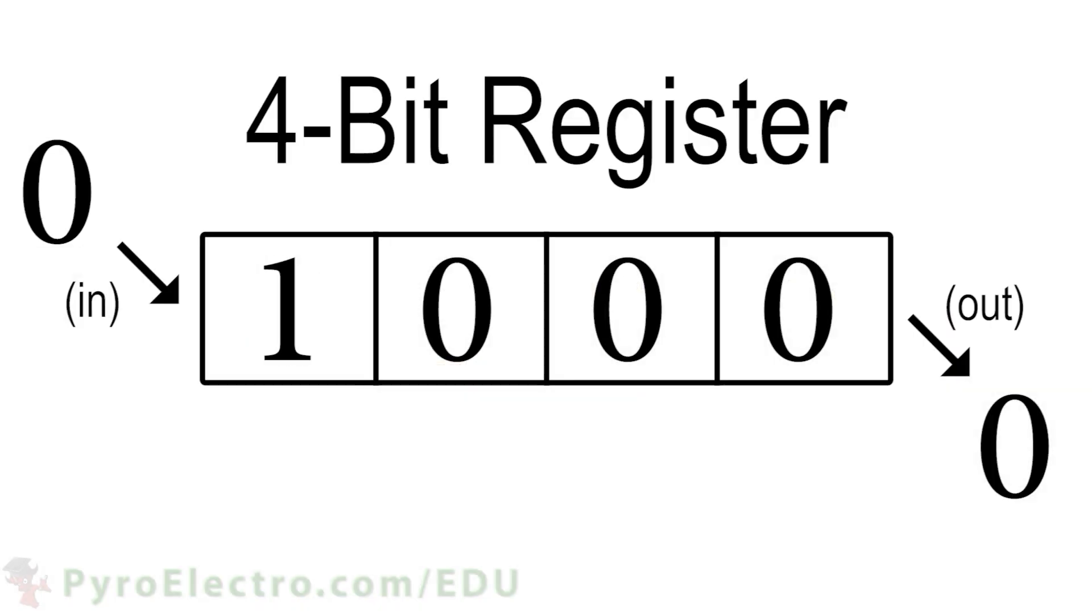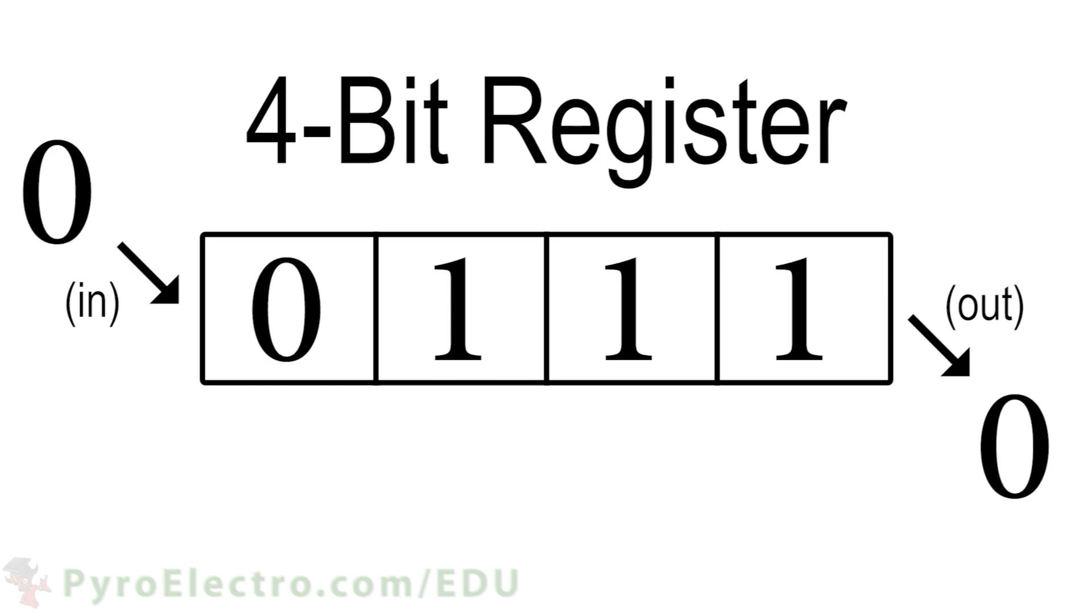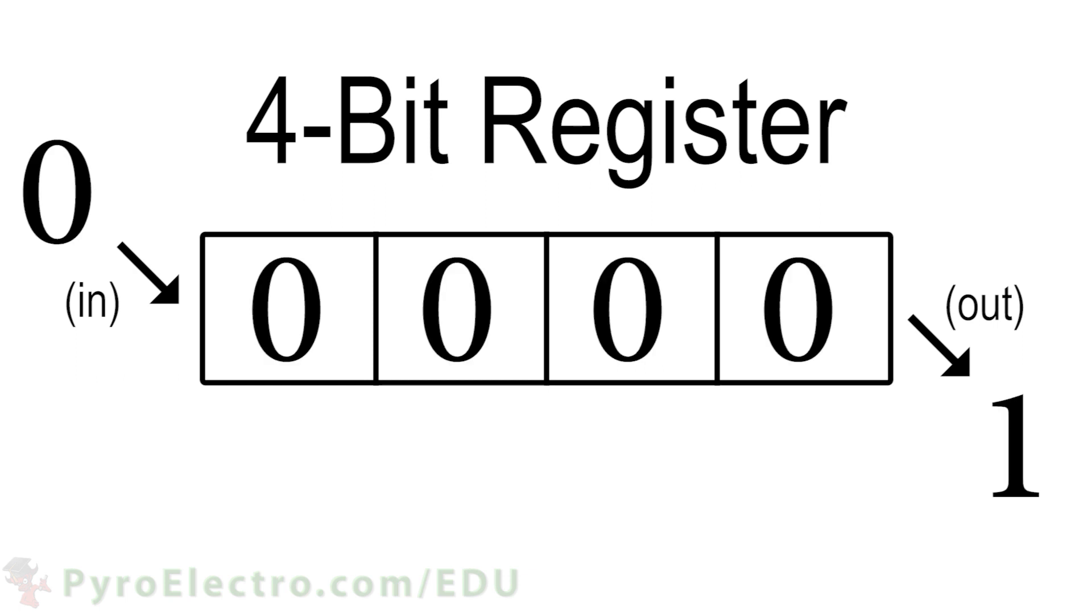In a shift register, the clock signal is used to shift bits into the register one clock period at a time. Luckily, we have a flip-flop that acts just like this, and it's the D flip-flop.